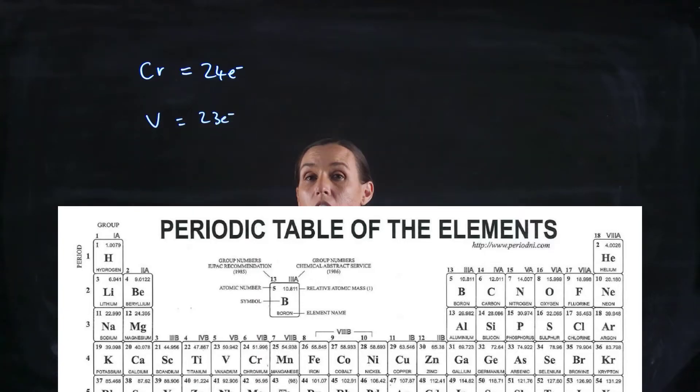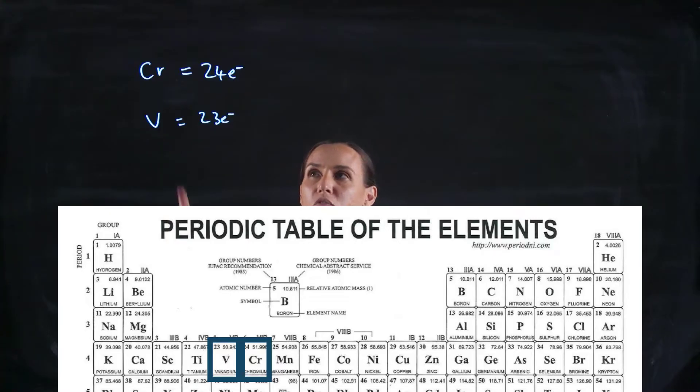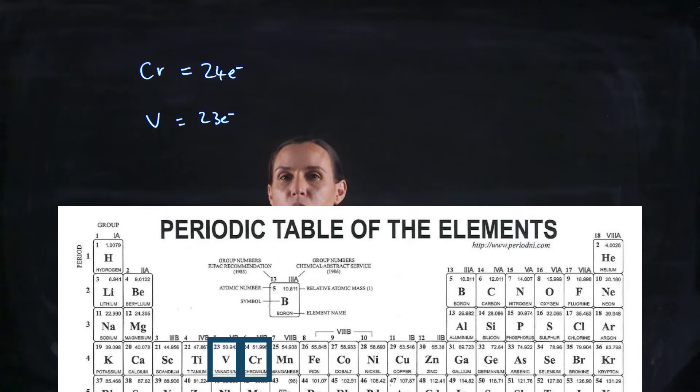Now I'm going to do the abbreviated form to save my arm from writing up all the possibilities. So when you find element number 24, which is your chromium, you go up and to the end of the period before. You want the closest noble gas that is before that element.